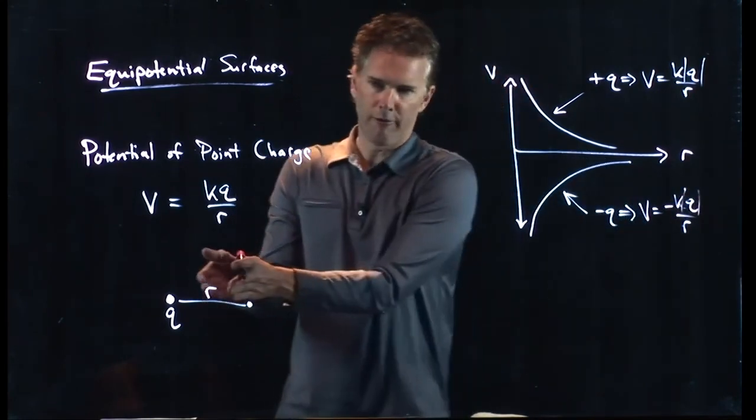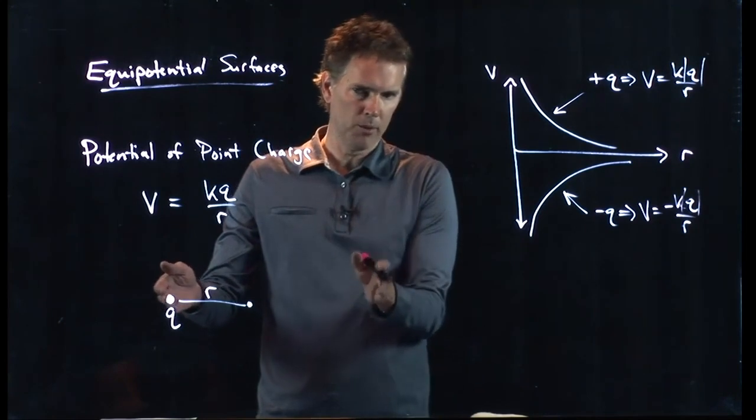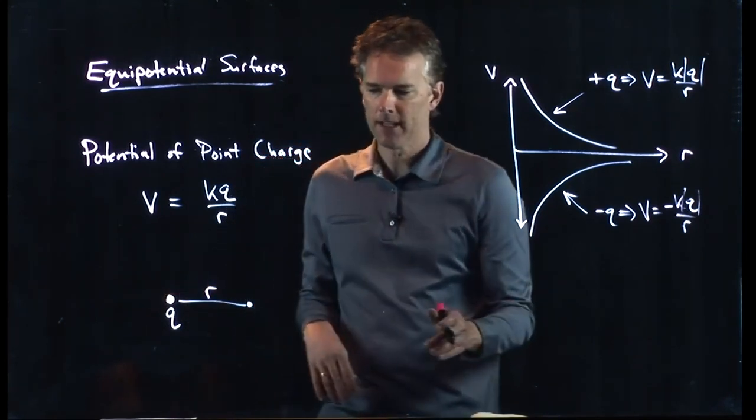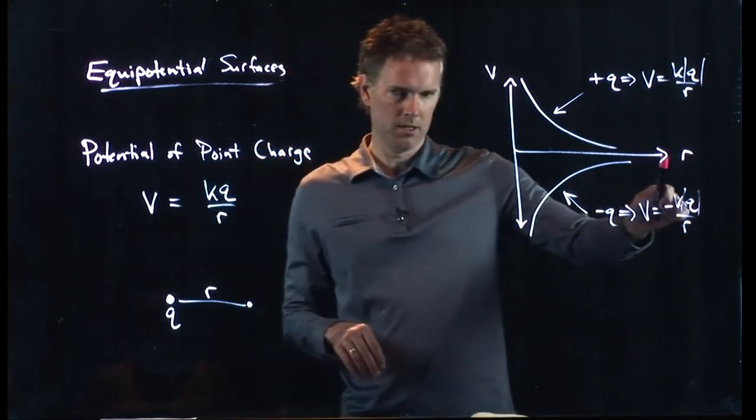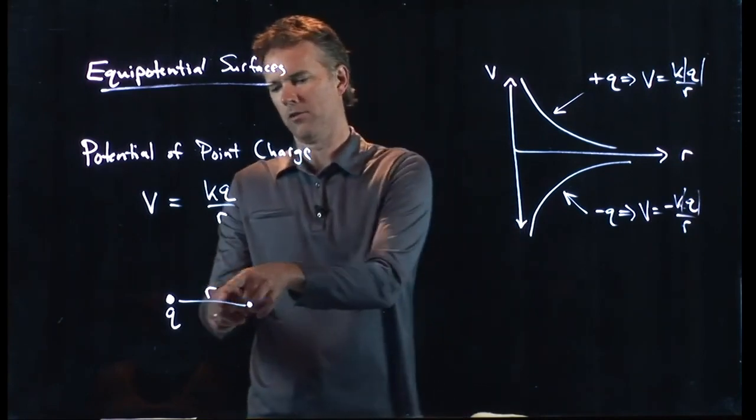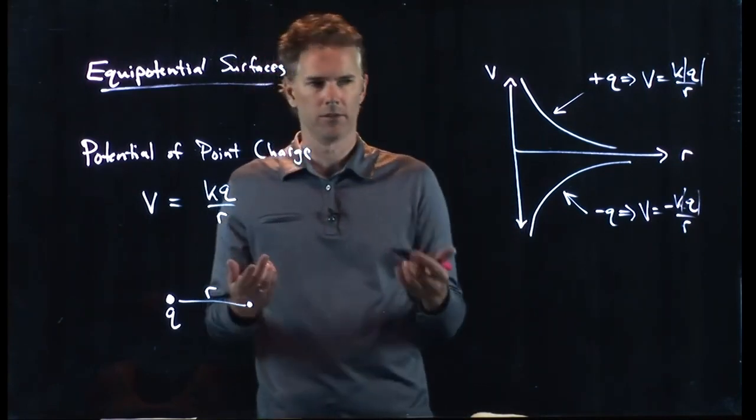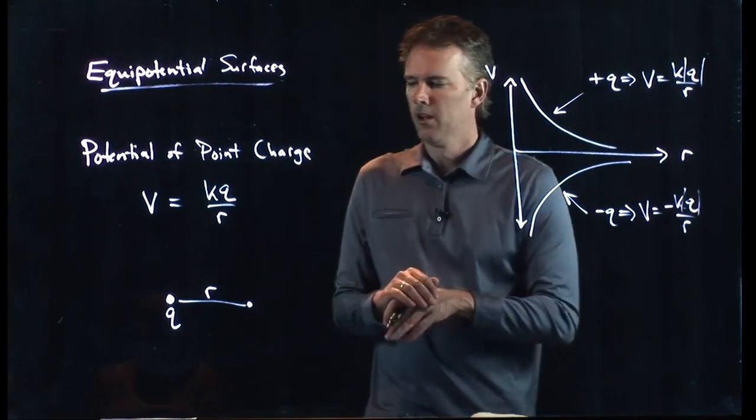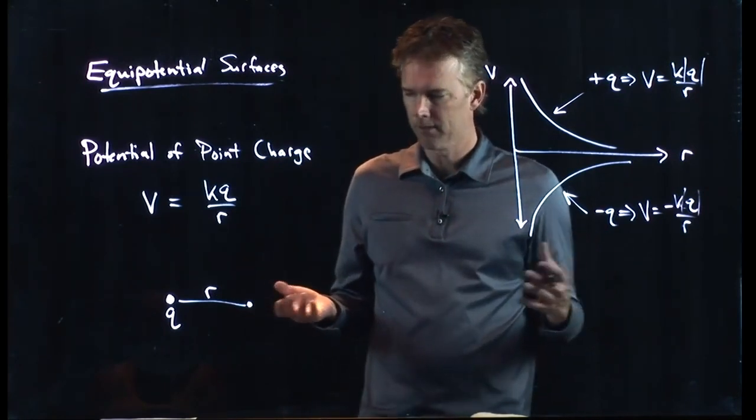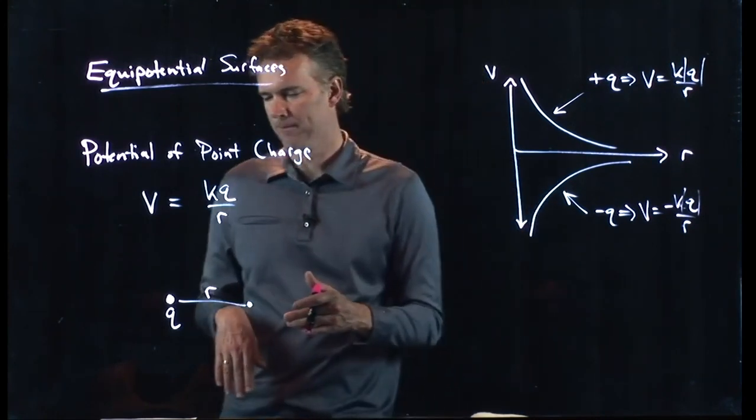So, as you go further away from a point charge, the potential drops off. And in fact, if you go all the way out to infinity, the potential goes to zero. R goes to infinity, it's in the denominator, and so the potential would go to zero. So, R equals infinity is our reference point. That's where potential is equal to zero.